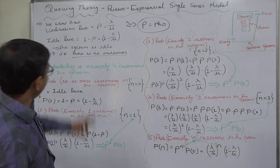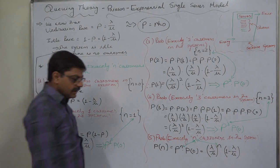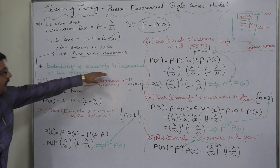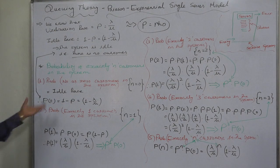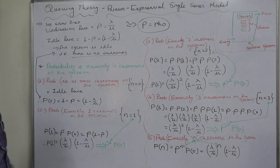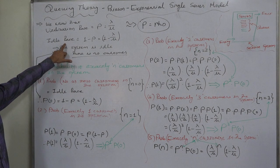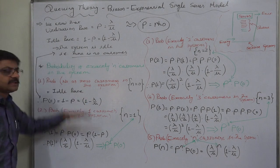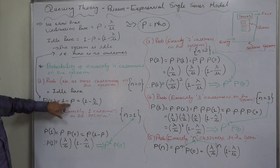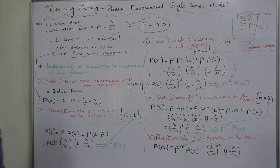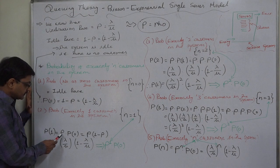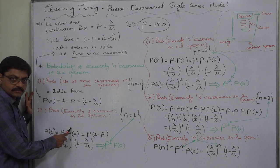We know these four things: lambda, mu, utilization rate, and idle rate. Now we are interested in calculating the probability of exactly N customers in the system. If N is 0, we want to calculate the probability of no customer in the system. The probability of 0 customers equals the idle rate, that is 1 minus rho, or 1 minus lambda by mu. If N is 1, the probability of exactly one customer in the system equals utilization rate rho multiplied by the probability of no customer.